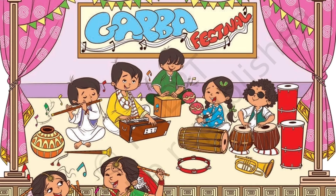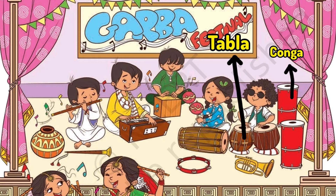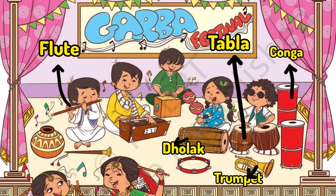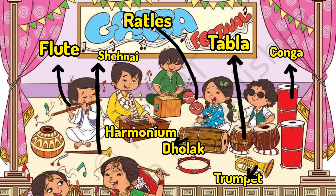We will find the musical instruments on this picture. We have: conga, tabla, trumpet, dolak, flute, harmonium, rattles and chanai. And also we have a pot and a music box. So these are the musical instruments listed on this image.